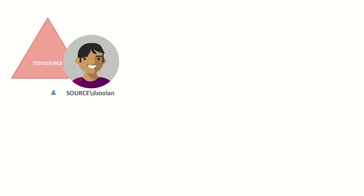First let's meet our employee Derek Zoolander. He's in the source domain and you can see his logon name here is dzoolan. Now Derek's true identifier within AD is actually this long complex string called his object SID, which is his unique identifier. There's no way that Derek's going to remember this long string, so that's why Active Directory provides him with this much more friendly and easy to remember logon name.